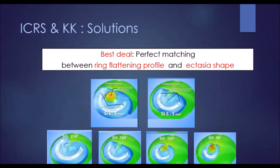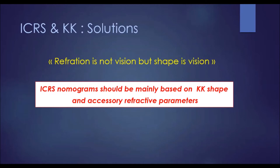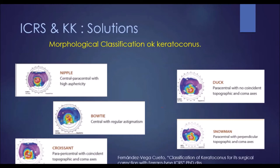The best approach today is to have a perfect matching between the ring flattening profile and ectasia shape. Refraction is not vision, but shape is vision. So today, intracorneal ring segment nomograms should be mainly based on keratoconus shape and accessory refractive parameters.